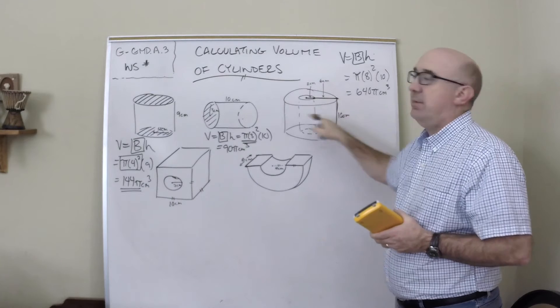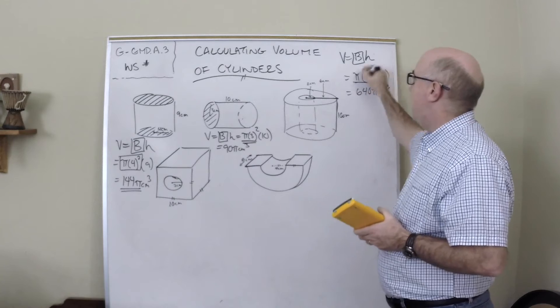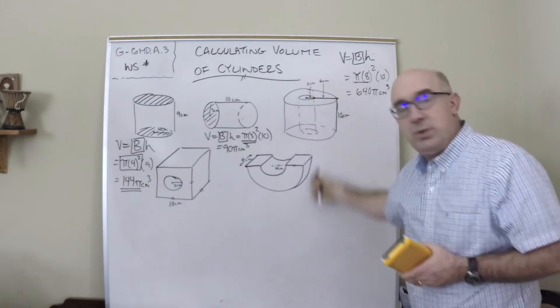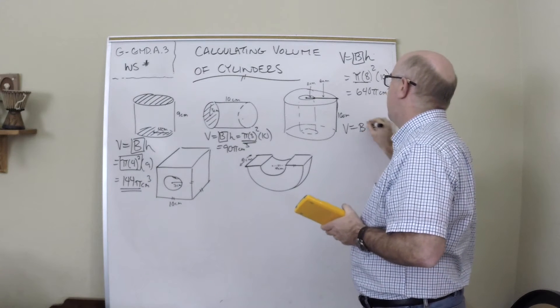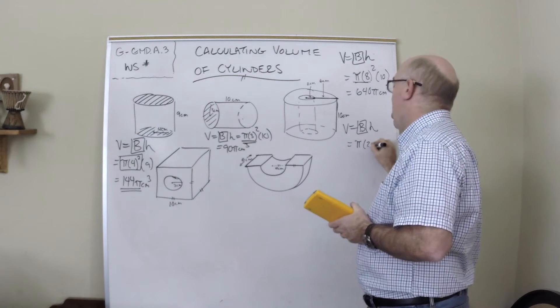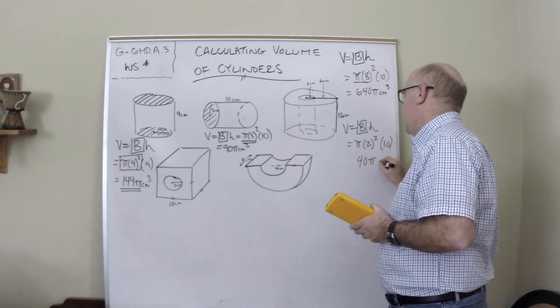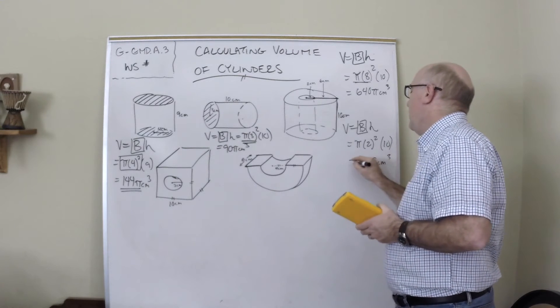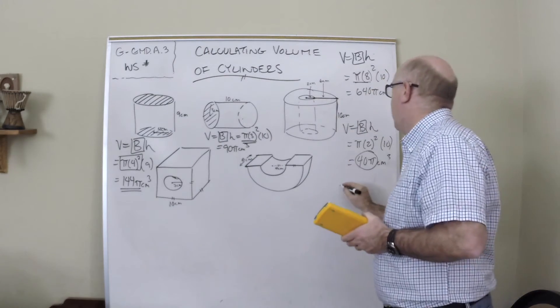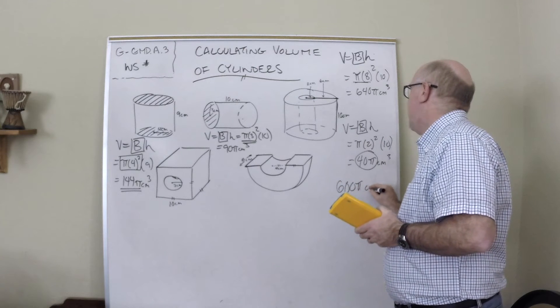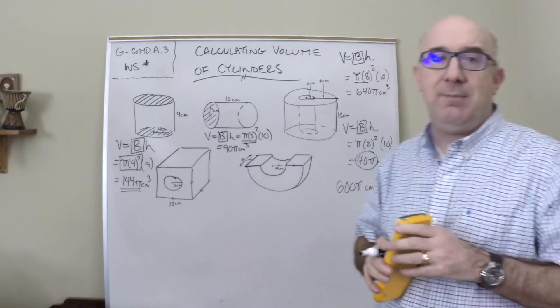Now what I did is I did the 2 and the 6, that gave me the radius of that whole thing, so that's why I used the 8. This is the base times its height. Now that would be as if there was not a hole drilled in there, so let's do the hole now. That would be base times height as well, π(2²) times the height which is also 10. This comes out to be 40π. So all we do to finish this is take 640π subtract the 40π in the hole there, and we get the final answer of 600π centimeters cubed.